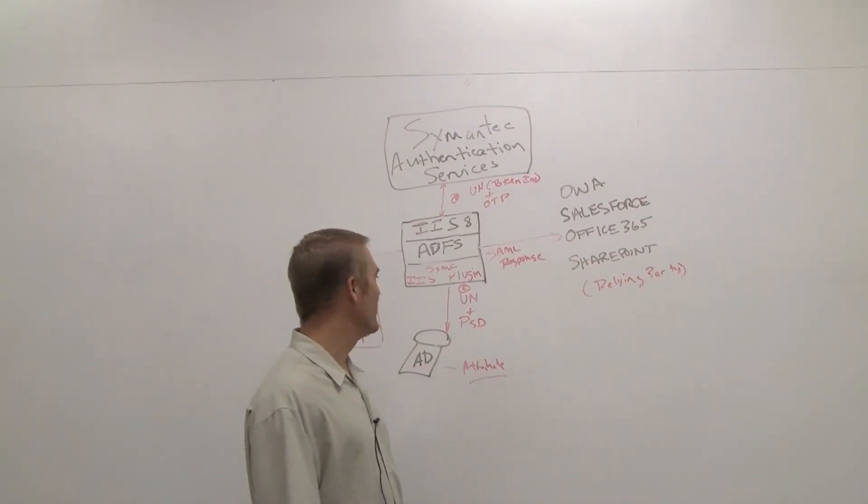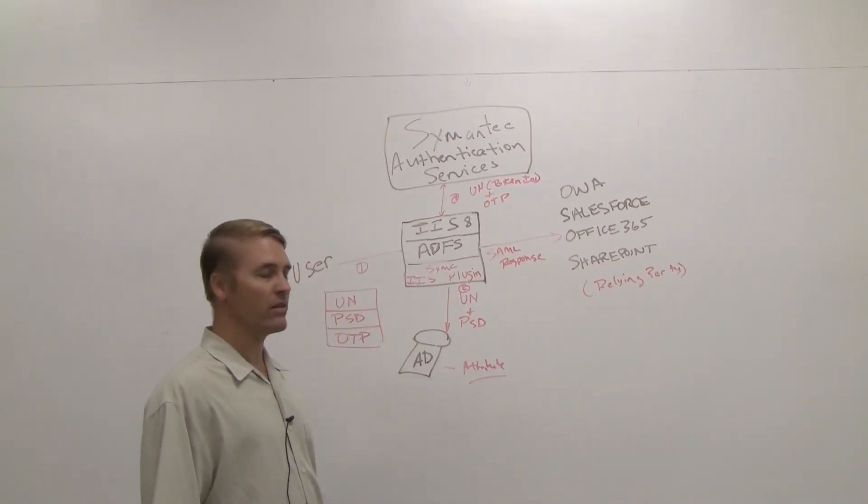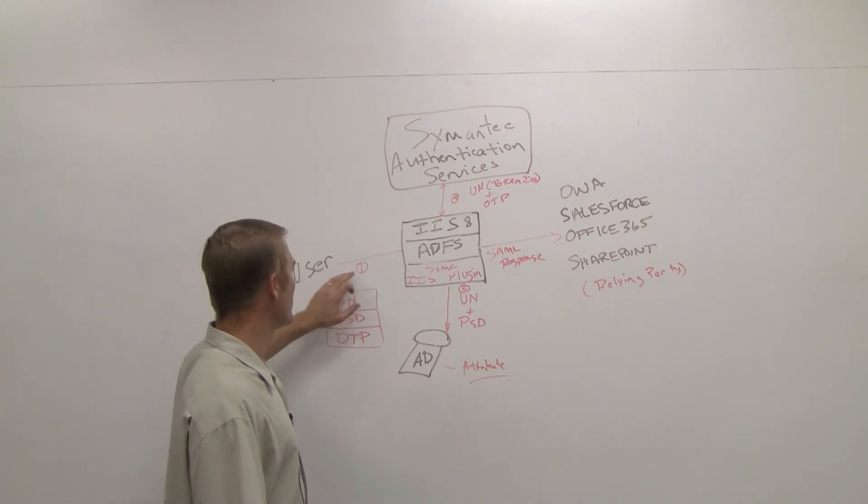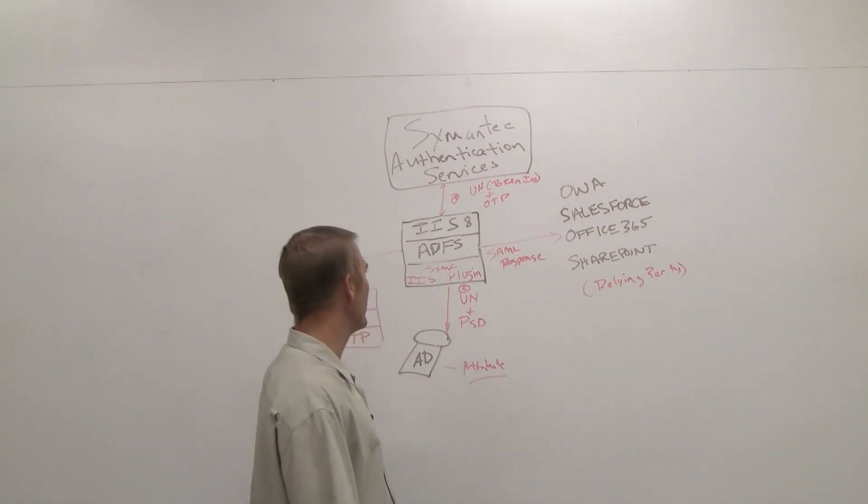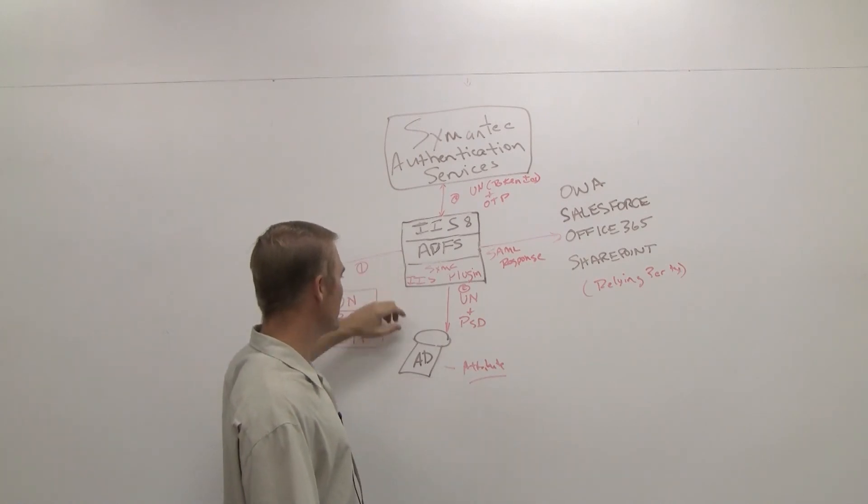Let me walk through the user experience walking through the flow. A user would be presented with a form which has been altered to request username, password, and OTP.